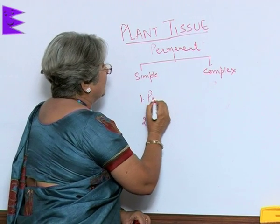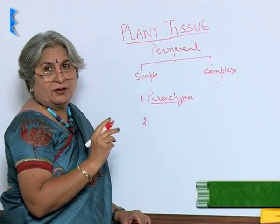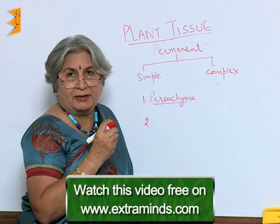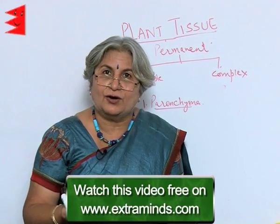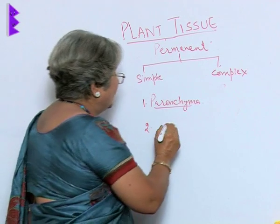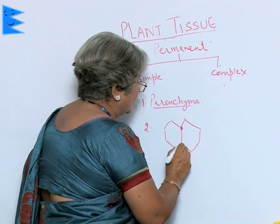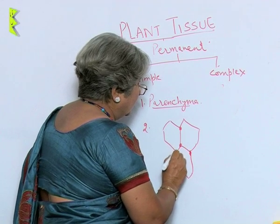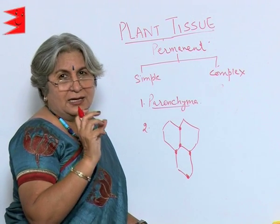So that was about parenchyma. In the stalks or in the tender stem we find another type of tissue which is not exactly like parenchyma because it is not thin-walled all along, but it is also not thick-walled all along — only in special areas like corners they are thick-walled. So these corners are thick-walled, and because of that the central space in the cell is a little less than in parenchyma.